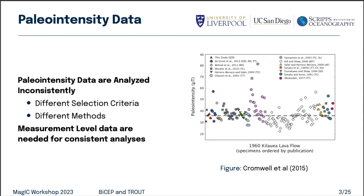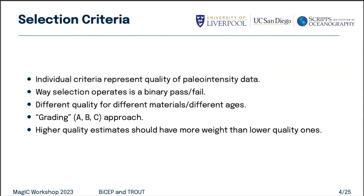It's key that we need measurement-level data to be able to compare paleointensity results. In terms of selection criteria, I found it very frustrating working with them because they represent the quality of paleointensity data, but they're just this binary pass/fail thing. You might want a different quality of data depending on what you're working on — if you're working on archaeointensity, you might want quite precise paleointensity, whereas if you're working on Proterozoic stuff, you might want to know what order of magnitude the field was. Some people go for a grading approach — A, B, or C grade — but there should be some weighting system where higher quality estimates have more weight.